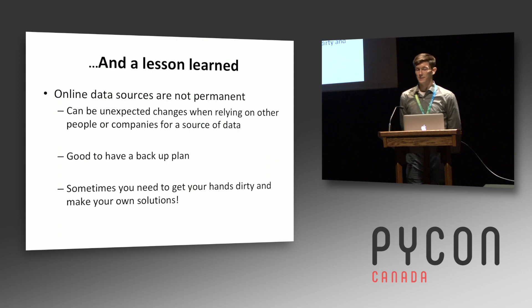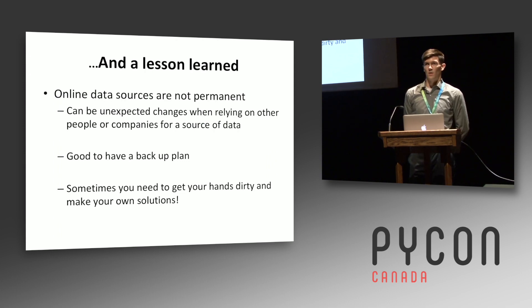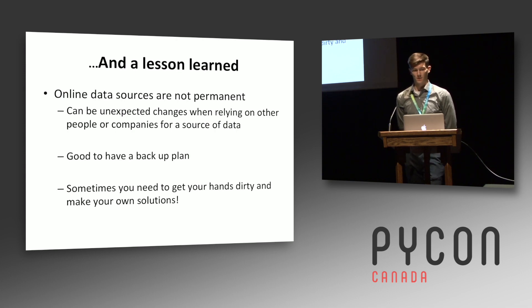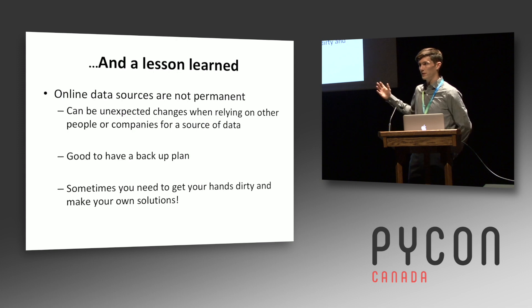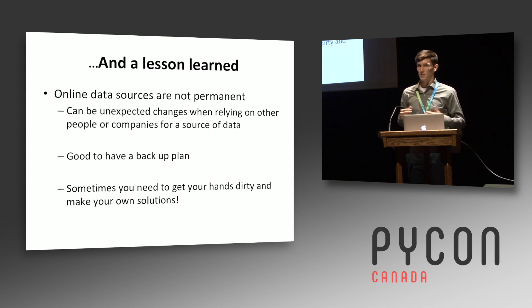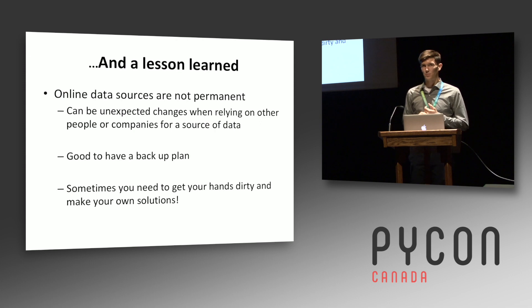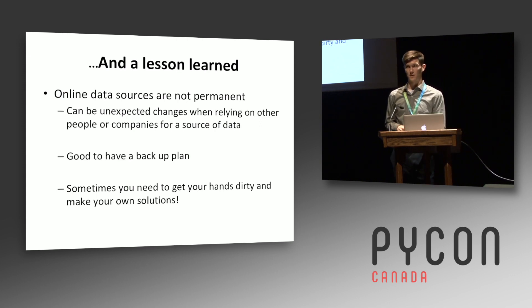The lesson learned here is that online data sources are not permanent. If you're relying on other people's APIs, you should be prepared for them to work differently, or think about the chances that they might not exist in their current form. It's always good to have a backup plan — that's where redundant sources of information come into play. You might not be using them actively day to day, but it's good to think about where else you could be acquiring this data from so you can quickly pivot if the need comes up. Sometimes there'll be temporary short-term situations where you might have to develop your own quick-and-dirty solutions.